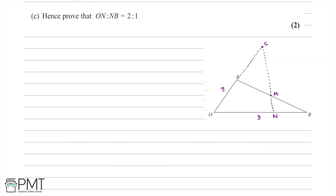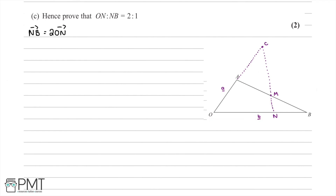Moving to the third part of this question, we're asked to prove that the ratio between the vectors ON and NB is equal to 2:1. Looking at our diagram, the vector ON is here and the vector NB is here. We can roughly see — remember this diagram isn't drawn to scale — that if the length OB was 3 units, then ON would be 2 units and NB would be 1 unit. This is what we've been asked to prove.